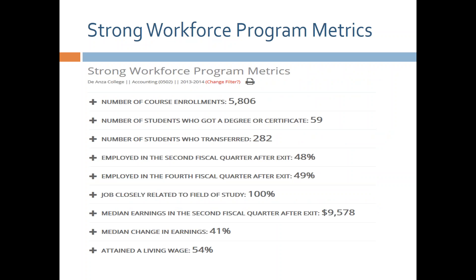We chose nine metrics, most aligned with WIOA, and added a couple to contextualize the information. In addition to employment in the second and fourth quarter, we also show whether students are in jobs closely related to their field of study, change in earnings, and whether they achieved a living wage in their region. Here's an example of an accounting program at De Anza College in the Bay Area, which shows some fantastic numbers for planning.